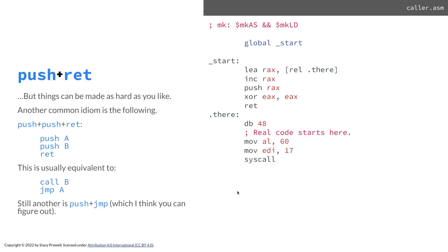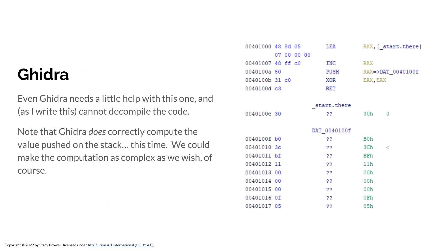Push-push-return can be done as well: push one address, push another address — this return will go to B, and then within B we might do another return to go to A. That's equivalent to call B and then jump A. Push-jump is another technique: I push an address, I jump somewhere, and when that returns I go to the address that I pushed. Even Ghidra needs some help with this — it cannot decompile this code. It does correctly compute the value pushed on the stack in this case, but we can make that computation as complex as we wish and beat it.